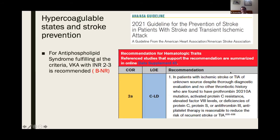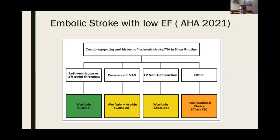For hypercoagulable states, the 2021 guideline is clear: VKA only for antiphospholipid syndrome — not for antiphospholipid antibody positivity alone. For the rest of the cases, there is no evidence for long-term anticoagulation — it is antiplatelets. For embolic stroke with low ejection fraction: if there is a sitting thrombus in LA or LV, three months of warfarin is probably enough. With a left ventricular assist device, it is aspirin plus warfarin. LV non-compaction requires warfarin. For other cases, individualize. Other than NVAF-associated low ejection fraction, do not put them on long-term oral anticoagulations.